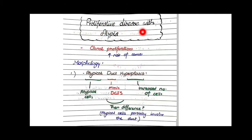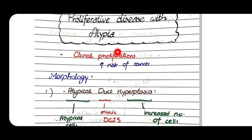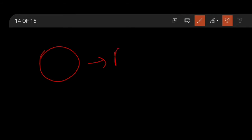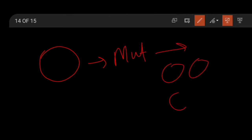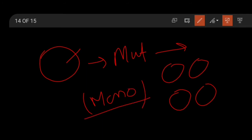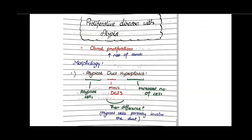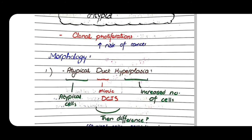Now we will discuss proliferative disease of breast with atypia. The cells are proliferating and there will be cells of atypical morphology. These lesions are clonal — meaning monoclonal — proliferations, and hence show increased risk of cancers. There is monoclonal proliferation of an abnormal or mutated cell, and as these cells are proliferations of a mutated cell, they will be atypical in their structure and morphology — hence the name proliferative disease with atypia.